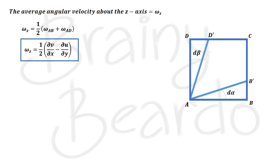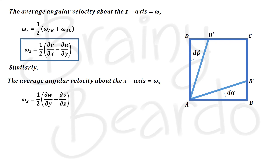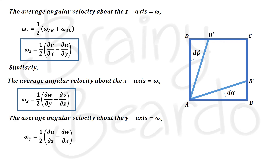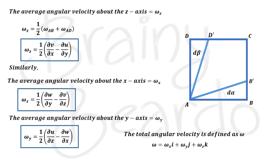Similarly, the angular velocity about the x-axis is ω_x = ½(∂w/∂y − ∂v/∂z), and about the y-axis: ω_y = ½(∂u/∂z − ∂w/∂x). The overall angular velocity vector ω is written in vector form as ω = ω_x·i + ω_y·j + ω_z·k. This omega is called rotation.